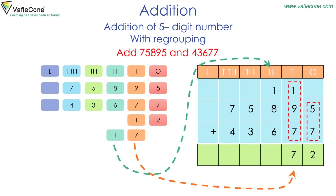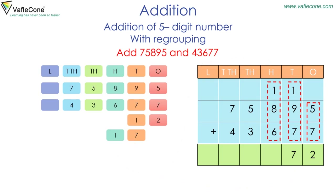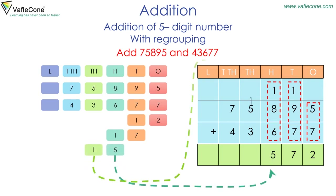We start adding at the hundreds place: eight plus six plus one is equal to fifteen, or one thousand and five hundred. Placing five at the hundreds place and one at the thousands place. Now adding at the thousands place: one plus five plus three is equal to nine.